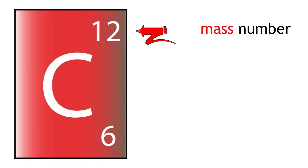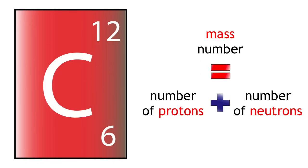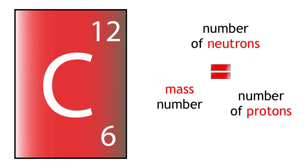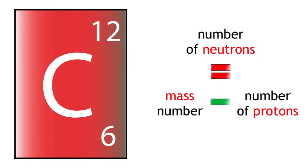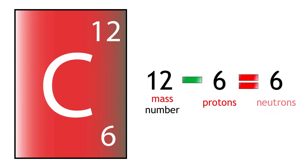Carbon-12 has a mass of 12 and 6 protons. Remember, mass number equals protons plus neutrons. So we can rearrange this formula to give us neutrons equals mass number minus protons. 12 minus 6 equals 6. Therefore, it has 6 neutrons.